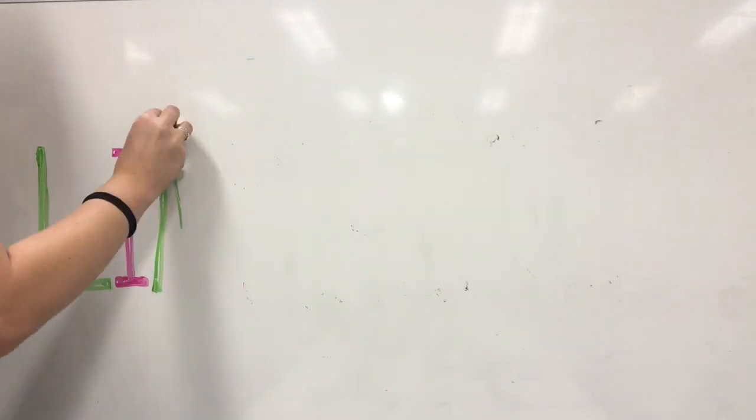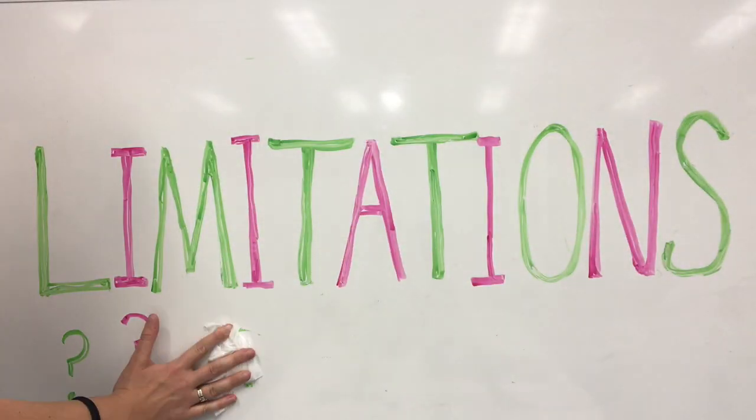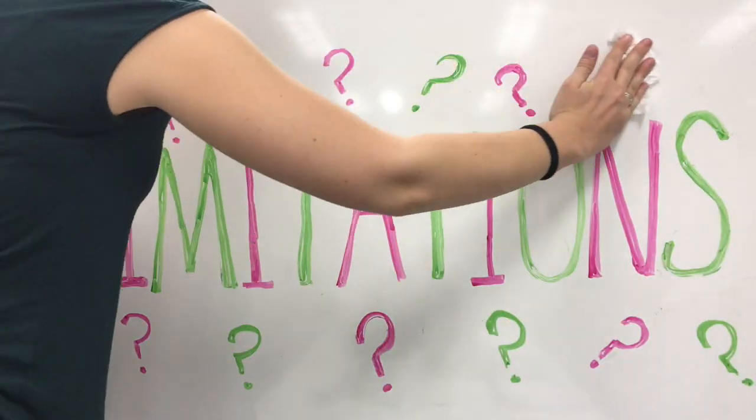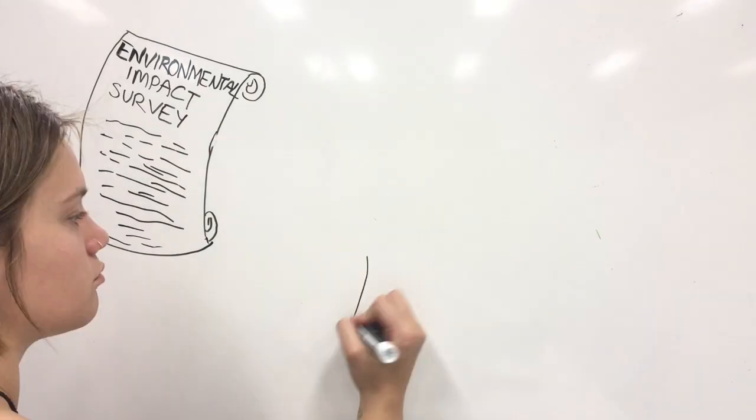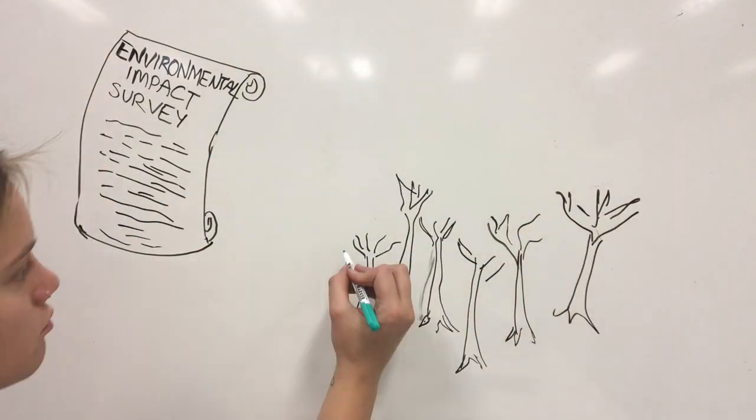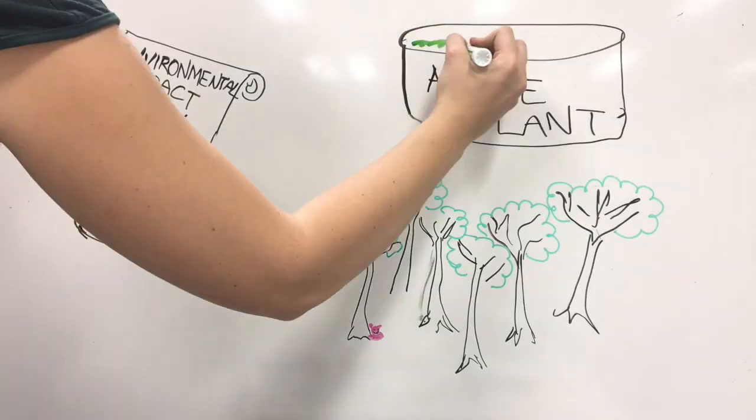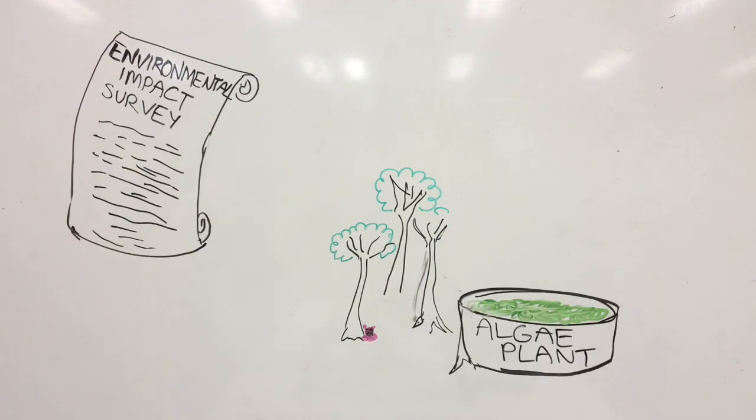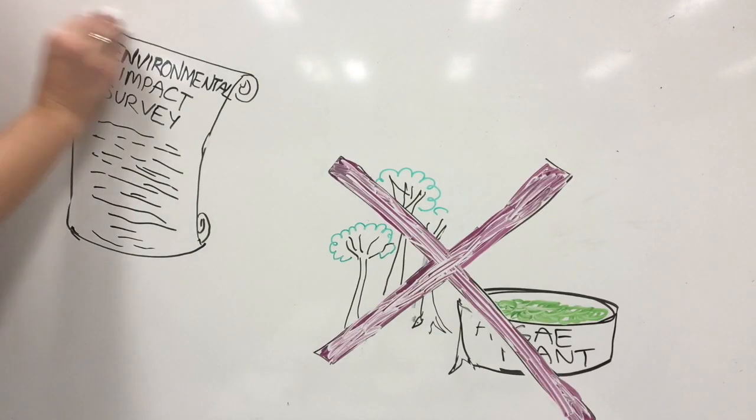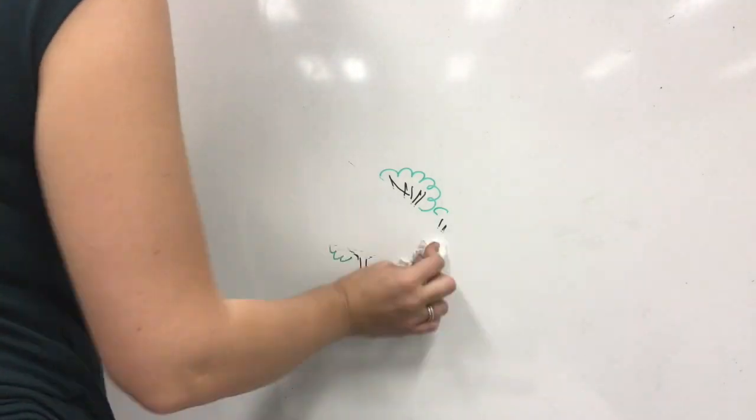So you may be wondering, if algae is so great and diverse, why aren't we using it more? There are some limitations to its implementation in the food industry. Firstly, to mass-produce algae for products, we'd need large facilities for growth. Environmental impact assessment surveys have been used to assess the level of impact the construction of large-scale ponds would have, and a very real potential threat is that construction could lead to displacement of surrounding flora and fauna through destruction of habitat.